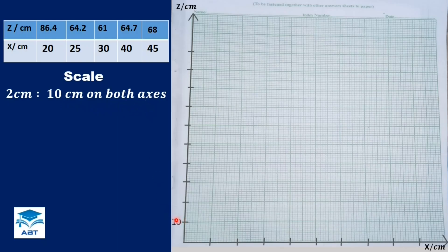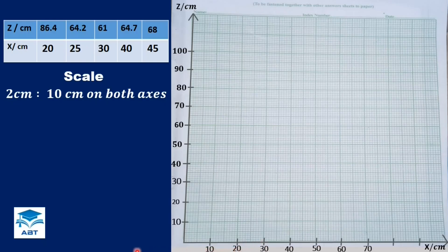So we start with 10 cm, 20, 30, 40, 50 and so on on the Z axis, and on the X axis too we have 10, 20, 30, 40, 50, 60 and so on. Each 2 cm box has 10 divisions, so one small box represents one centimeter.